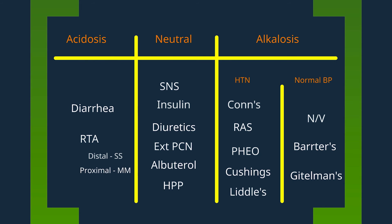Under normotensive hypokalemia, there's nausea and vomiting, and then there's Bartter's and Gitelman's syndrome — rare conditions but important to define. In Bartter's syndrome, the body mimics continuous infusion of furosemide, and in Gitelman's syndrome, it mimics continuous infusion of hydrochlorothiazide. These can be further classified by urinary calcium excretion, which is elevated in Bartter's and low in Gitelman's.